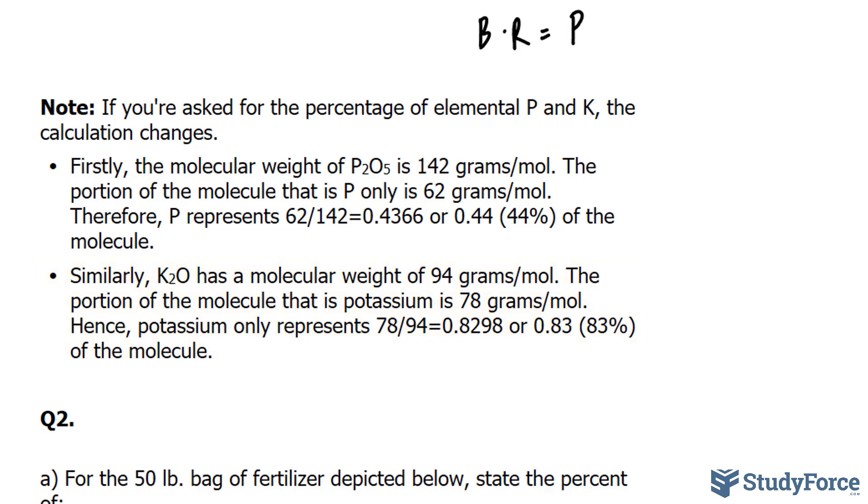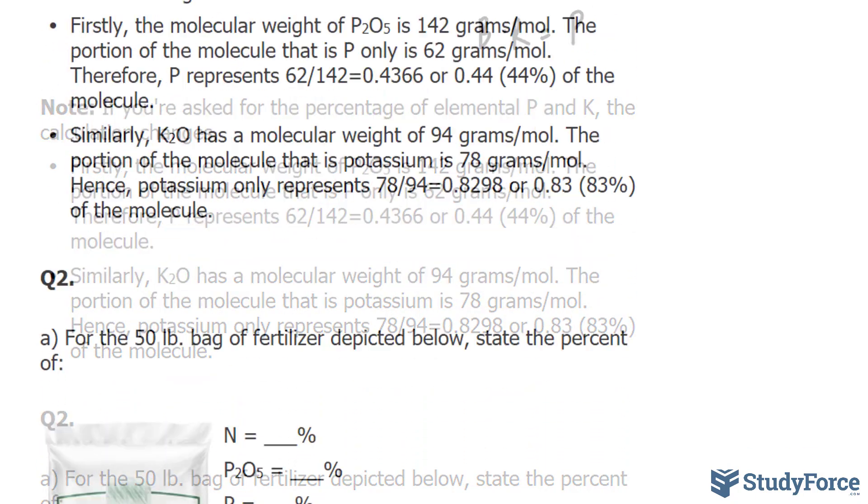So if you're being asked for the amount of elemental phosphorus and potassium, after finding the amount of P2O5 and K2O, you simply multiply those values by their percent rates, which we just talked about. If that's confusing to you, let's do an example.